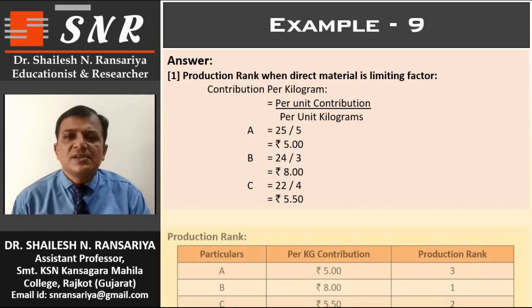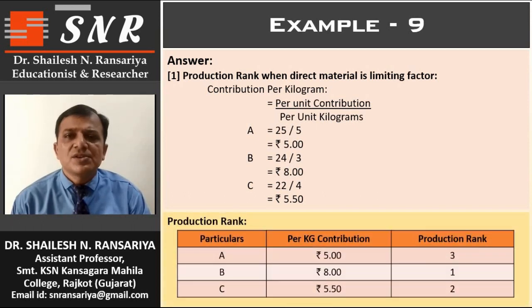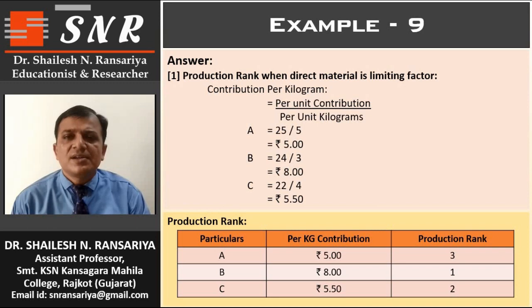Now the production rank on the basis of key factor contribution. Per kilogram contribution: Rs. 5 for A, Rs. 8 for B, and Rs. 5.50 for C. The highest contribution is in product B, so rank 1 is given to B. The second highest is in product C, so rank 2 is given to C. The lowest contribution is in product A, so the third production rank is given to product A.